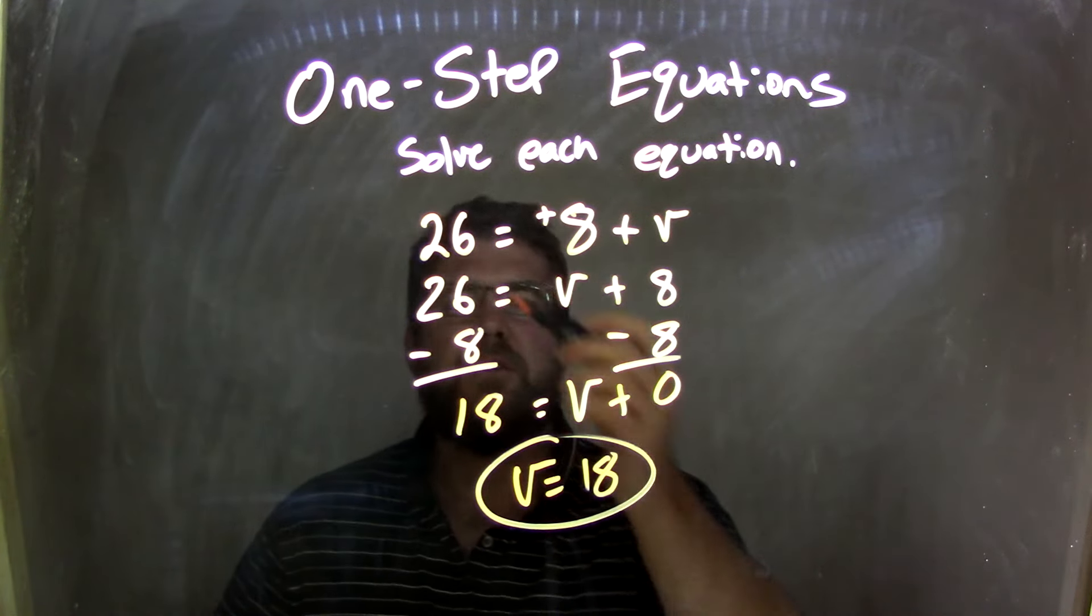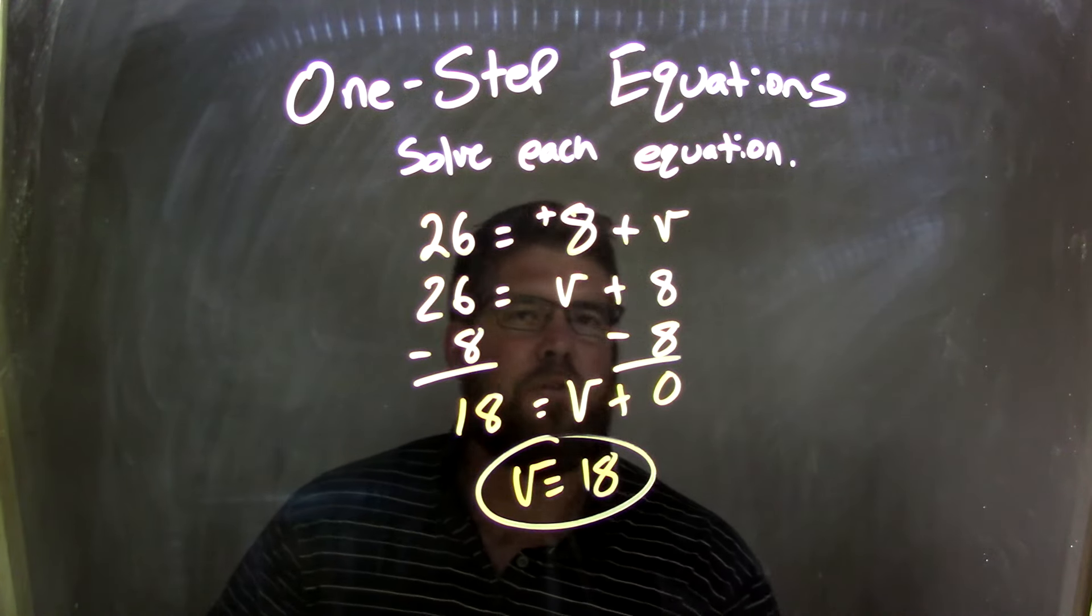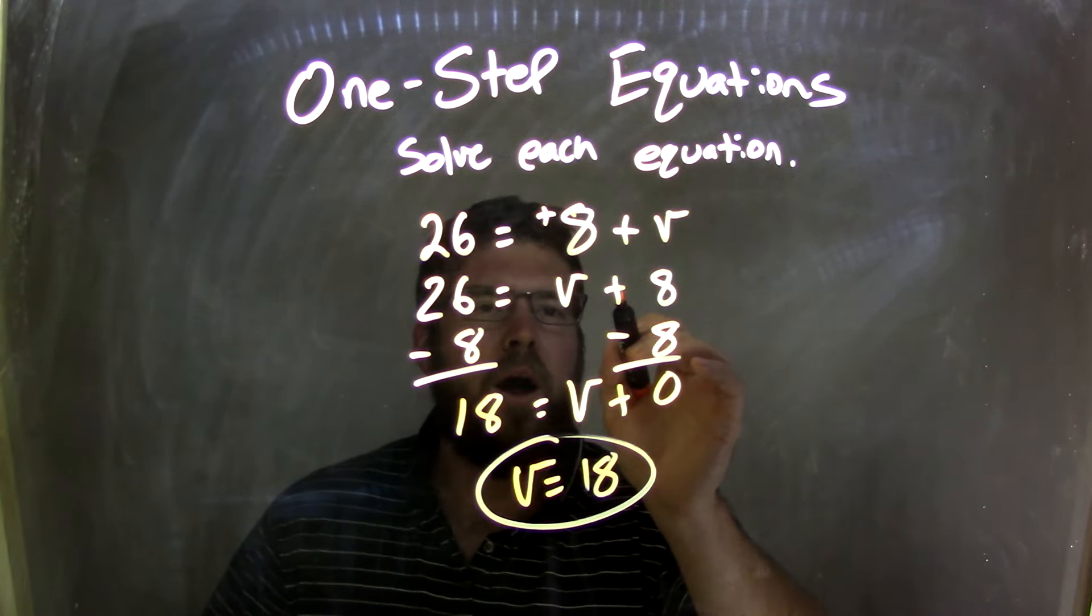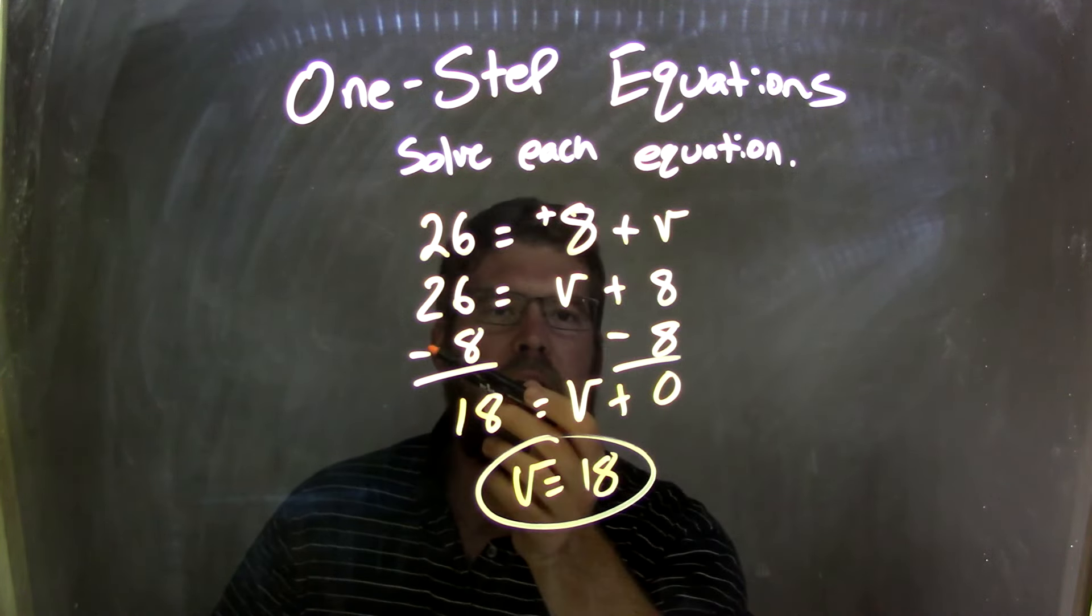So let's recap. I first started with 26 equals 8 plus V. I realize that's a positive 8 there. I use the commutative property to rearrange V plus 8, right? So 8 plus V to be V plus 8.